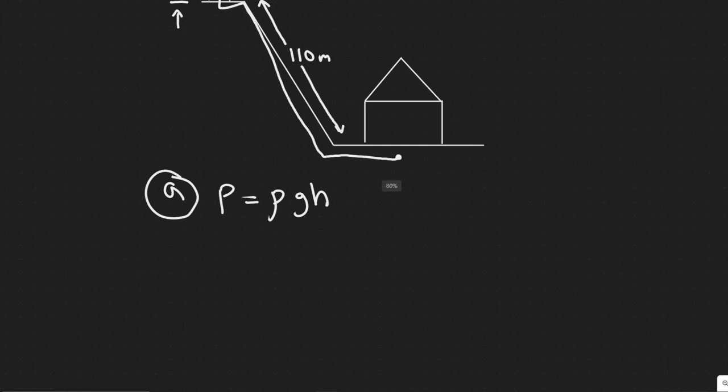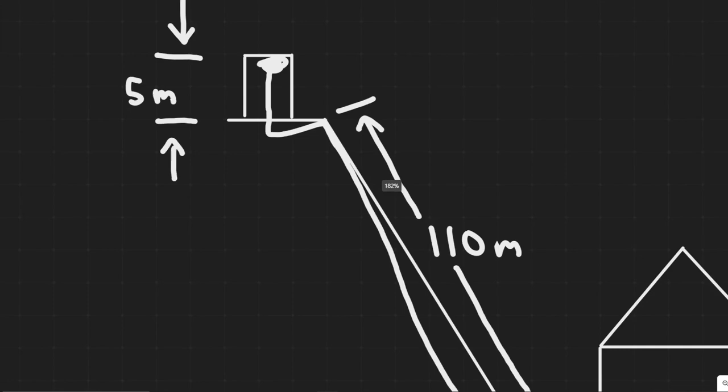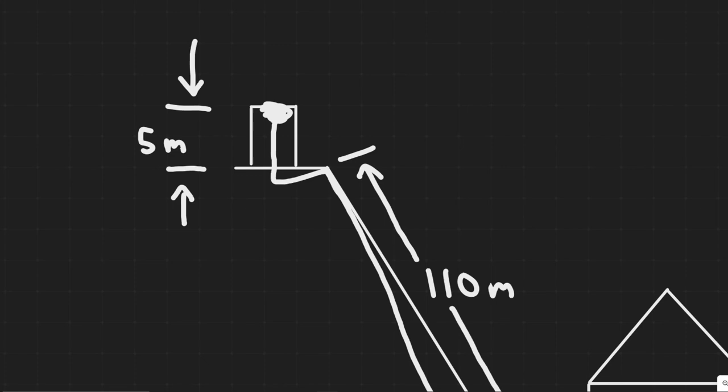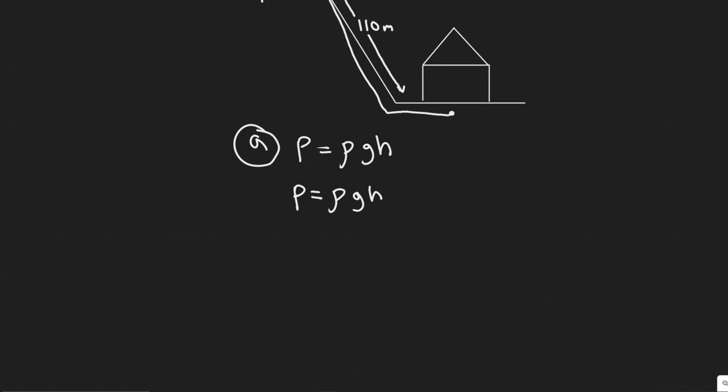So let's go ahead and start with A. We're going to be solving for the gauge pressure. And we know pressure, or the gauge pressure in this case, is equal to ρ, which is the density of our liquid, which in this case is water, multiplied by g, which is the acceleration due to gravity, and h, which is basically the vertical distance from the free surface, which in this case is right here at the top of this full tank of water. So that's what the h is.